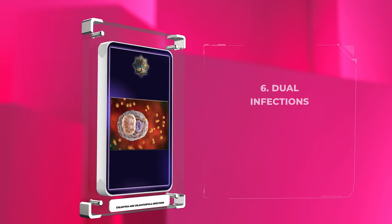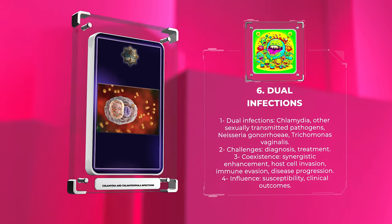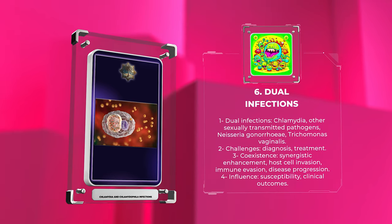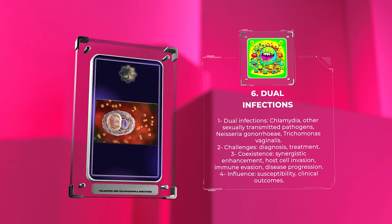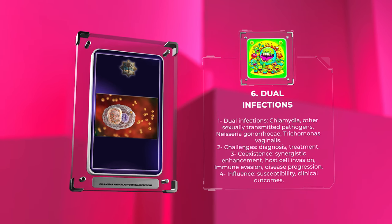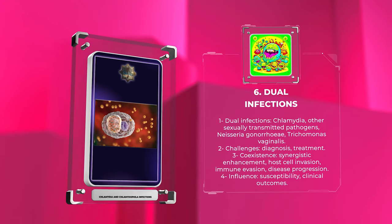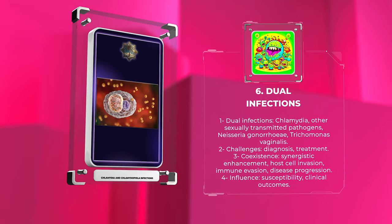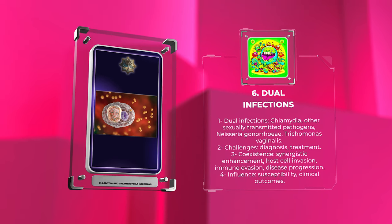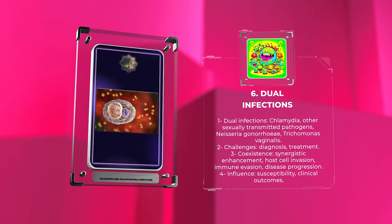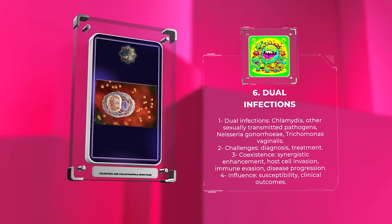Dual infections involving chlamydia and other sexually transmitted pathogens, such as Neisseria gonorrhoeae and Trichomonas vaginalis, are common and pose significant challenges for diagnosis and treatment. The coexistence of these pathogens can synergistically enhance host cell invasion, immune evasion, and disease progression. Moreover, the presence of one pathogen can influence the susceptibility and clinical outcomes of the other. Understanding the complex interplay between chlamydia and other sexually transmitted pathogens is crucial for effective management and control of these infections.